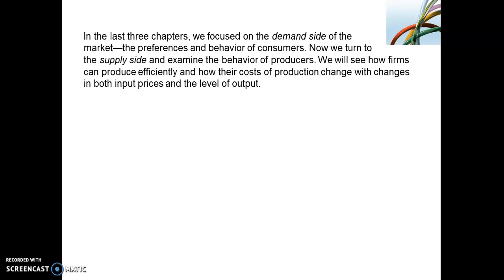Up until now, you have been focusing solely on the demand side and the behaviours of consumers. In chapter 6, we are going to switch to the behaviour of the producer — so we are focusing on the supply side. Firms have to produce efficiently, so they have to consider the cost of production and determine how much output they are going to produce. We will discuss these important decisions in chapters 6 and 7, which combined give us what we call the theory of the firm.